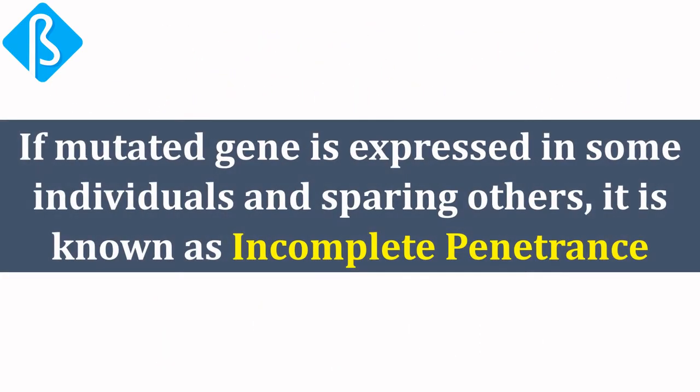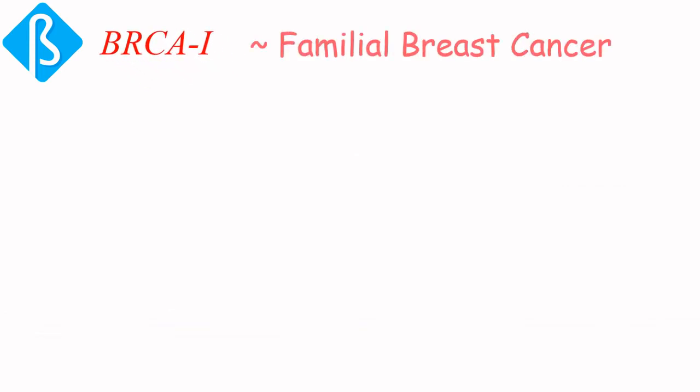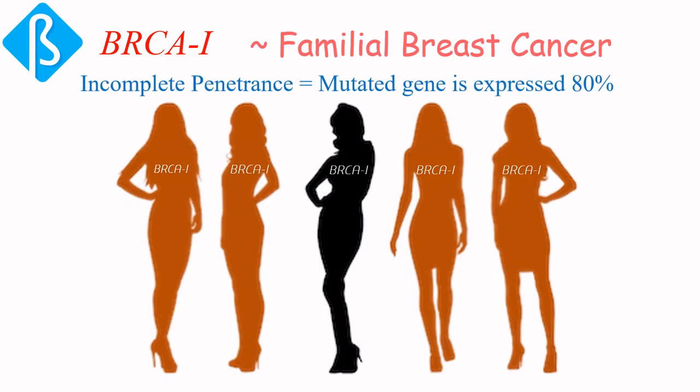But if a mutated gene is expressed in some individuals and spares others, it is known as incomplete penetrance. One example that quite often occurs is the BRCA1 gene, which causes familial breast cancer. Out of many women who have the BRCA1 gene, 80% of them will actually show breast cancer — which means the mutated gene is 80% penetrant. This is incomplete penetrance.